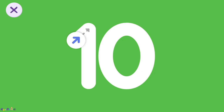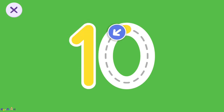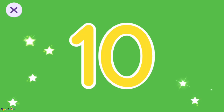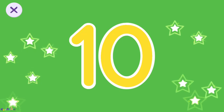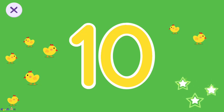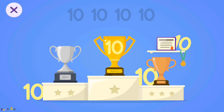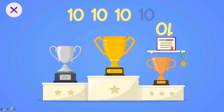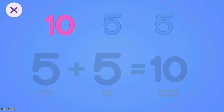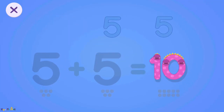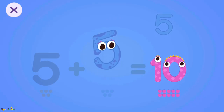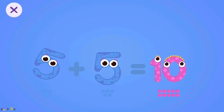Trace the number ten. Count the stars: one, two, three, four, five, six, seven, eight, nine, ten. Find all the numbers in the room. Three, five. Move the numbers to get the right answer. Five plus five equals ten.